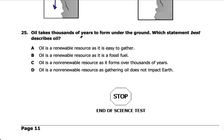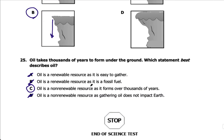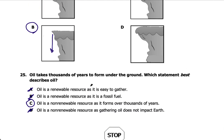Number twenty-five, the last question: oil takes thousands of years to form underground. Which statement best describes oil? Oil is non-renewable — it takes a long, long time to replenish itself, so it's not A or B. Reading C and D: oil is a non-renewable resource because it forms over thousands of years — I agree with that. D says gathering oil does not impact earth — it definitely does. So the answer is C. That is the end of the science review — this is a good study guide for tomorrow's benchmark. Let me know if you have any questions. Have a great day!